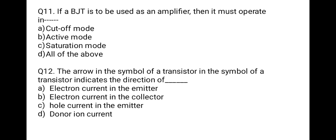The next question: when a transistor is used as an amplifier, it must operate in — first: cutoff mode; second: active mode; third: saturation mode; last: all of the above. We know that in active mode the transistor is used as an amplifier, so the correct option is B, active mode.